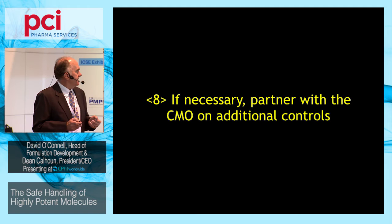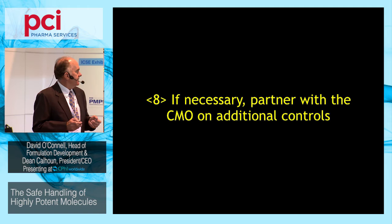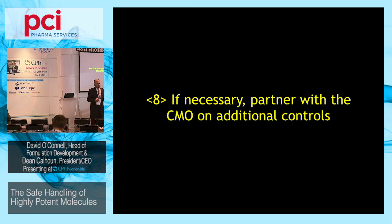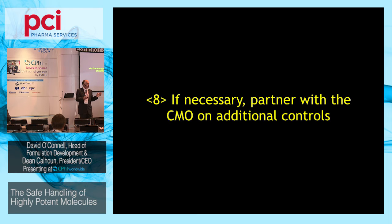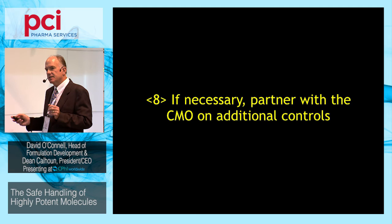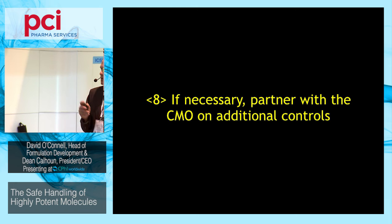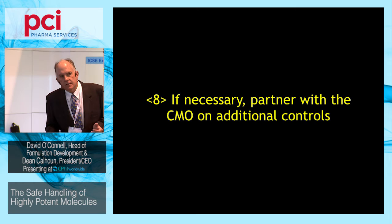Eighth, if necessary, partner with the CMO on additional controls. We see this all the time — they really like the CMO because their quality programs are where they need to be, they like their facility, but they may not have the right piece of equipment. So if you really like everything else with the CMO, partner and maybe do cost-sharing for that additional piece of equipment. We see this often, particularly with big pharma companies — they'll want to use a specific CMO but may not have the right size reactor, so they'll cost-share the purchase of that additional equipment.